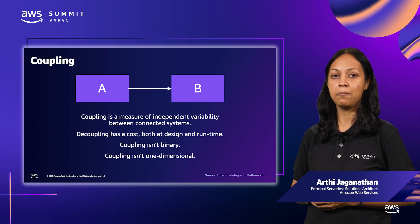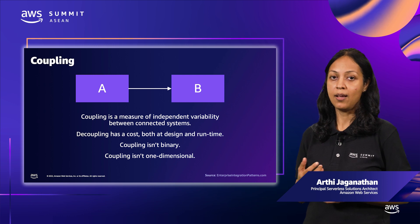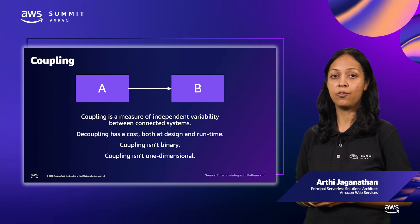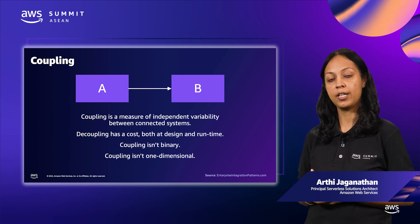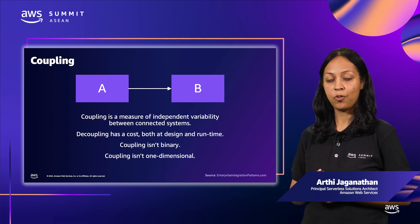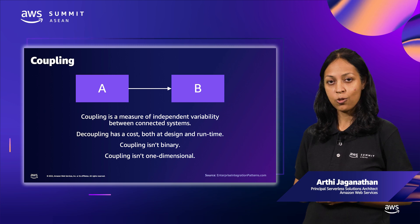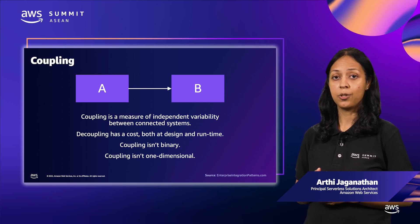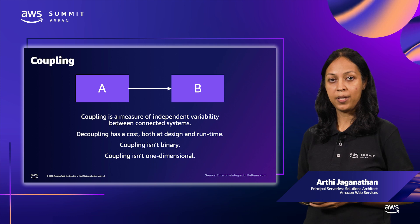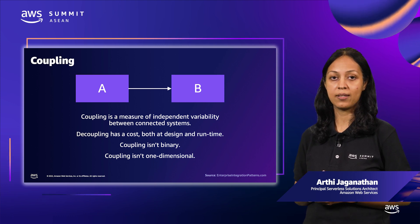Systems can be coupled along multiple dimensions. As an example, if we choose JSON as the data format for communication between A and B, then they have a data format dependency on JSON. Let's also say we choose REST as the communication protocol — then A and B have a temporal dependency on REST.